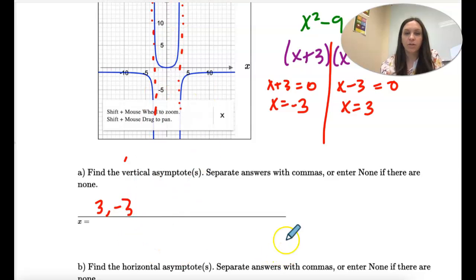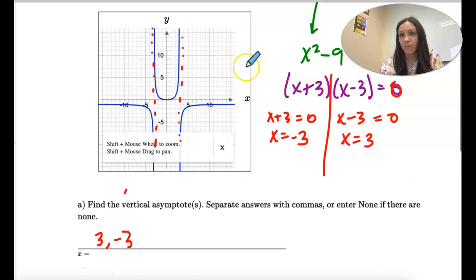And then we want to find the horizontal. Maybe you can see it from the graph, maybe not.